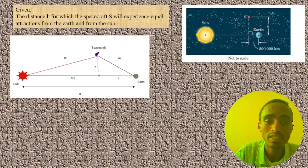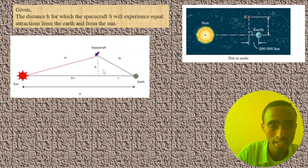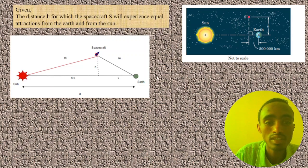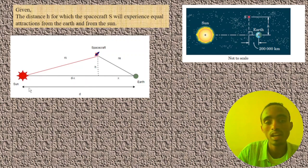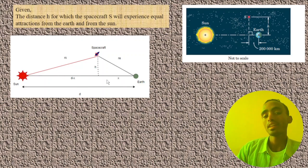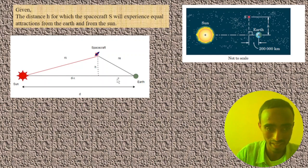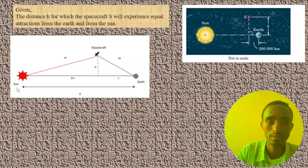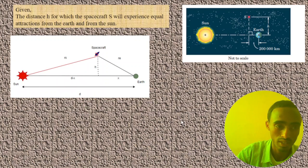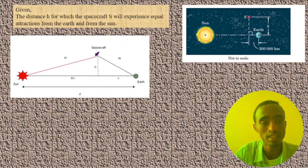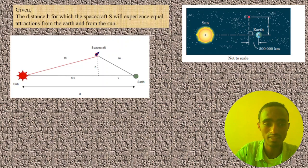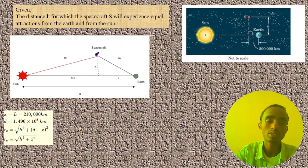RE is very important for calculating the force of attraction between the spacecraft and the Earth. H is our target — we want to determine H. The distance between the Sun and the Earth is D, which is already known and given. The distance from H to the surface of the Earth is X, and the distance from H to the Sun is D minus X, since D is the total distance between the Sun and the Earth.